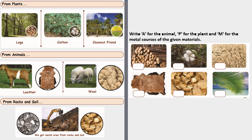Now here we have to write A for animal, P for plant and M for metal sources of the given material. First one is P because they are logs. Second one is P because it is cotton. Third is A, it is wool. Next one is again A because it is leather. Now next we have M for metal and then P for plant.